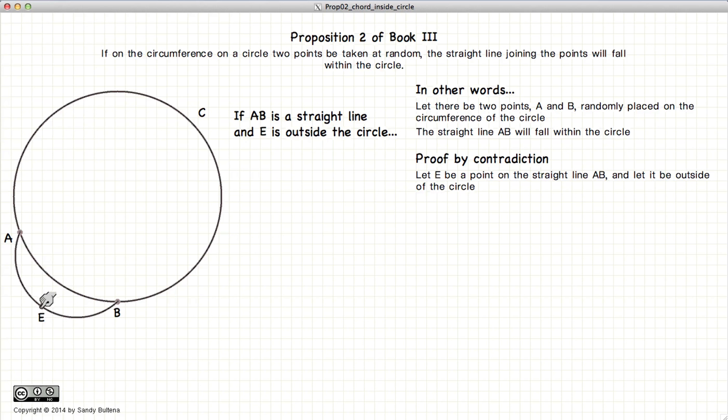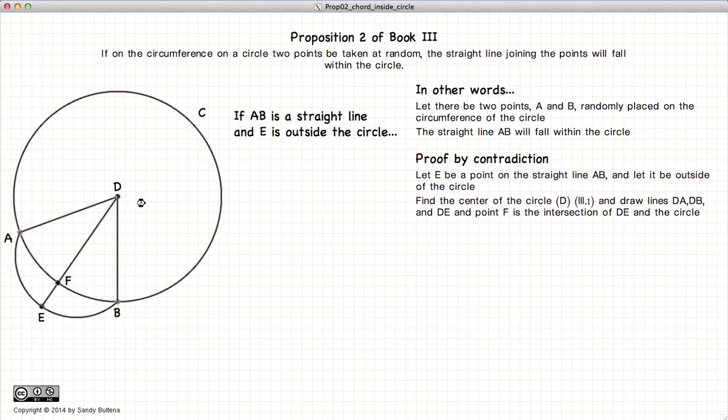And E is a point that bisects the circle. Now we are going to find the center of the circle using the methods described in Proposition 1 of Book 3, and draw a line from D to A, D to E, labeling the intersection with the circle as F, and DB.